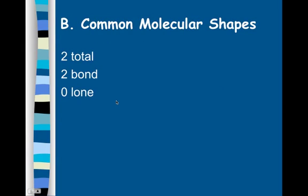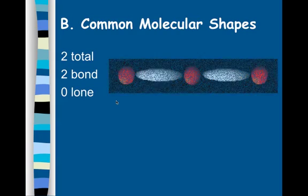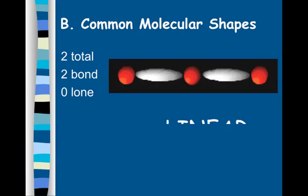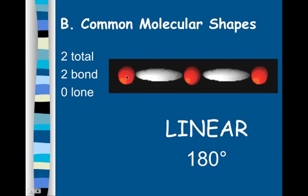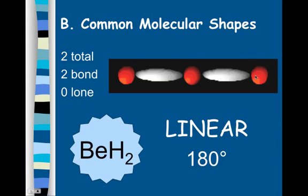Let's look at some common shapes. The first is the linear shape, with a bond angle of 180 degrees. An example is beryllium hydride. We have two pairs of electrons total, both bonding pairs, and no lone pairs.